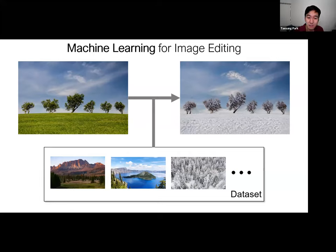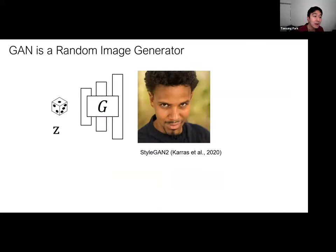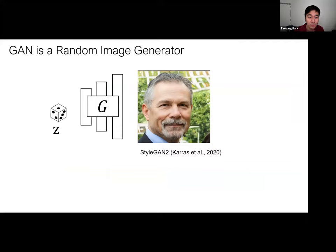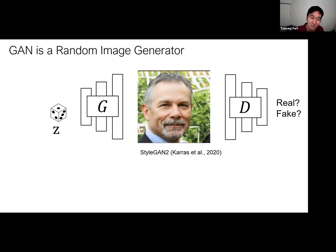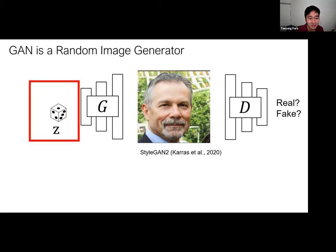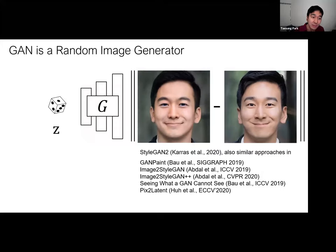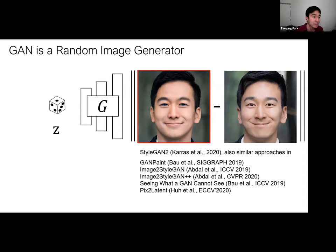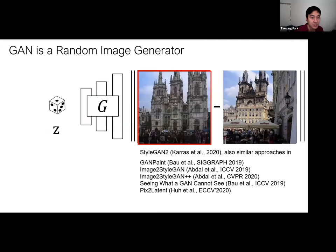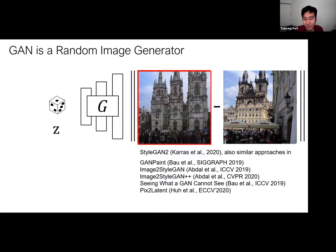Let's think about how to approach using machine learning for creating new images. Most people will think about GANs. GANs work by randomly sampling a latent Z vector and transforming it into a realistic image. Realism is enforced by simultaneously training a discriminator that determines if the generated image looks realistic. One interesting point is that GANs are like a random image generator. If I want to edit my own face, I should first find the corresponding latent vector that reproduces my photo, but that's not always easy. Test-time optimization in the latent space can be slow and imperfect.